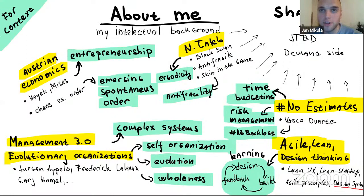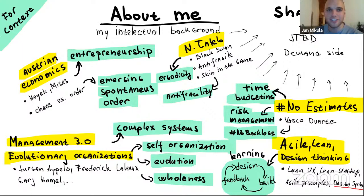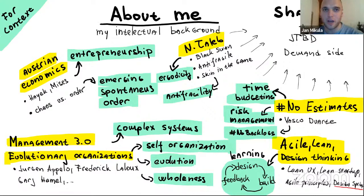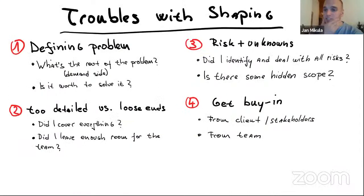I was also very influenced by Nassim Taleb's work on ergodicity and antifragility, which I think is great reading for product people. Then Shape Up came along and it was just — this is so great. It's written in such a practical way, and suddenly I had arguments I didn't have before. I no longer needed long conversations about why estimation is bad, because here was a practical way to manage the whole project.